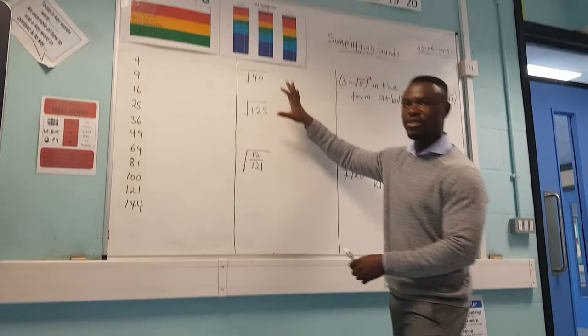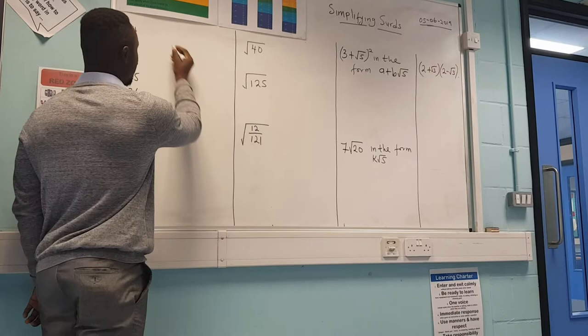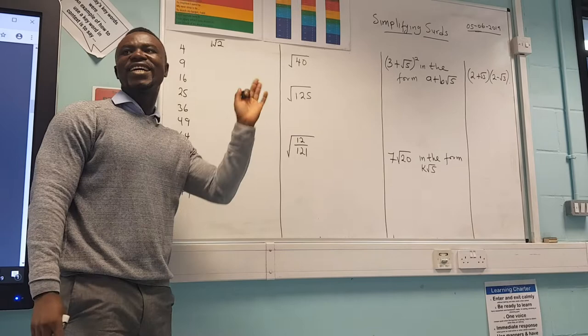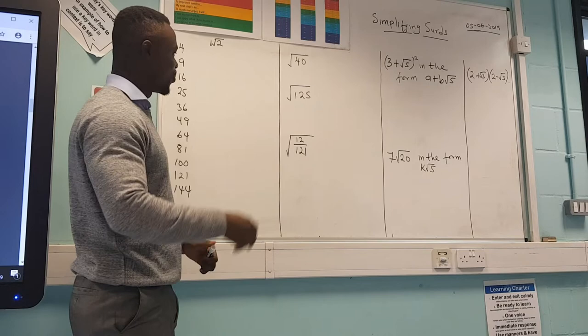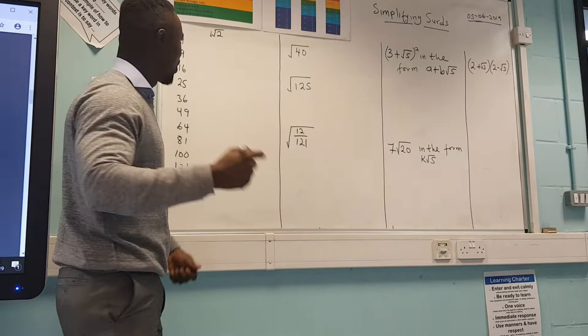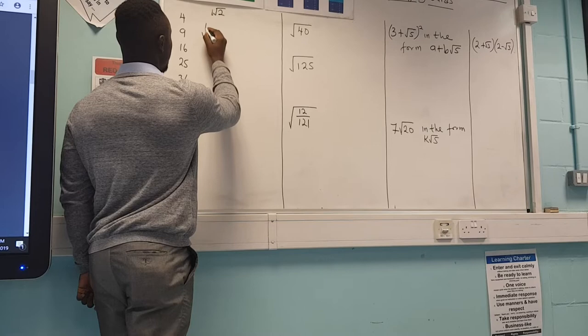Once we know our perfect squares, it's easy to simplify a surd. A typical example: if I write the square root of 2, you cannot tell me the exact answer, so to get an accurate answer we leave it in the square root — that is what we call a surd. It could be a cube root, fourth root, or any number that cannot be simplified. Now there are some simple rules you must understand.